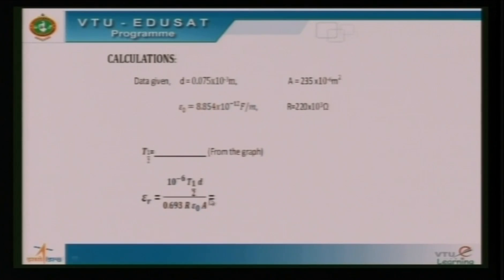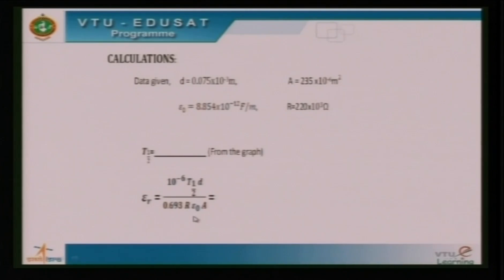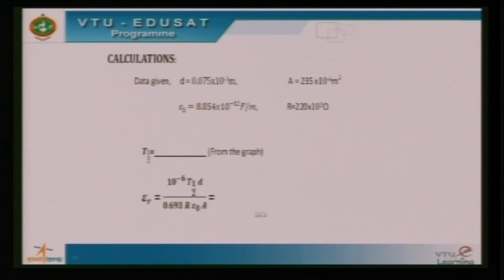We substitute the half-time value into the formula: epsilon_r equals 10 to the power of minus 6 times t_half times d, divided by 0.693 times R times epsilon_naught times A. Here, t_half is the half-time, d is the distance between the capacitor plates, R is the resistance of 220 kilo-ohm, epsilon_naught is the absolute permittivity of free space (8.54 × 10⁻¹² F/m), and A is the area of the capacitor plate.